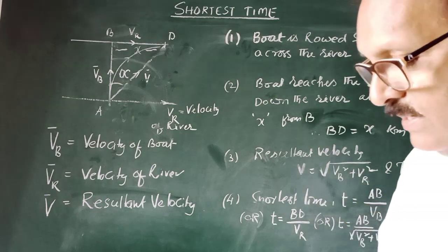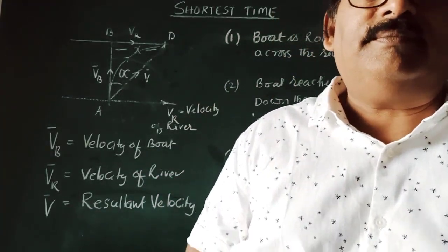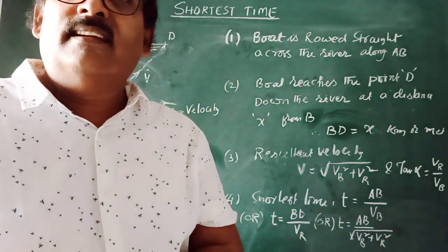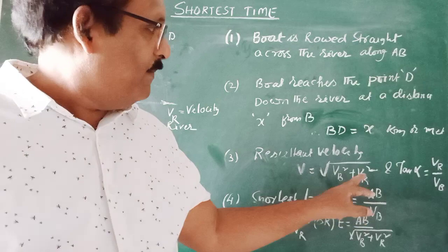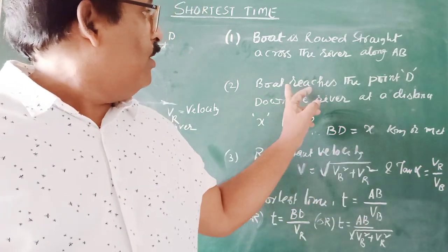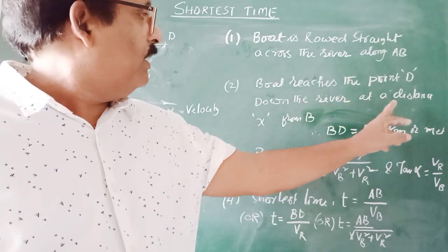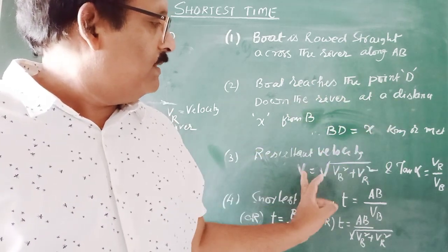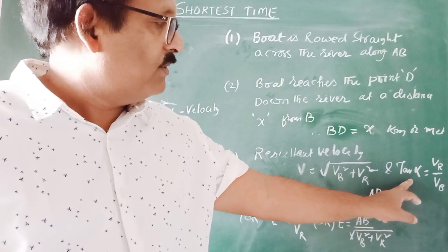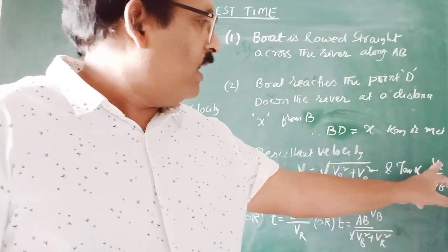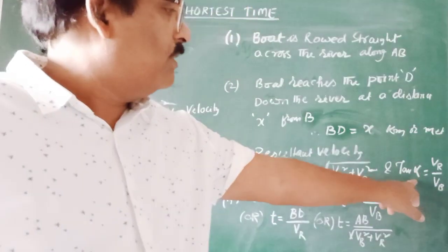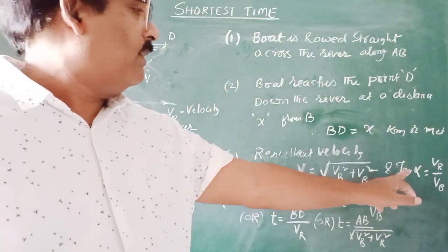So the resultant velocity V equals the square root of VB squared plus VR squared. The direction: tan alpha equals VR divided by VB, so alpha equals tan inverse of VR by VB. In the shortest time, always remember the angle is given by tan alpha.